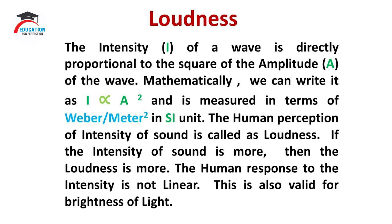Now let us see about the loudness. The intensity I of a wave is directly proportional to the square of the amplitude, that is capital A, of the wave. Mathematically, we can write it as I ∝ A², where capital I is called as the intensity of wave and capital A is called as the amplitude of the wave, also measured in Weber per meter square in SI unit. The human perception of intensity of sound is called as loudness. If the intensity of sound is more, then the loudness is more.